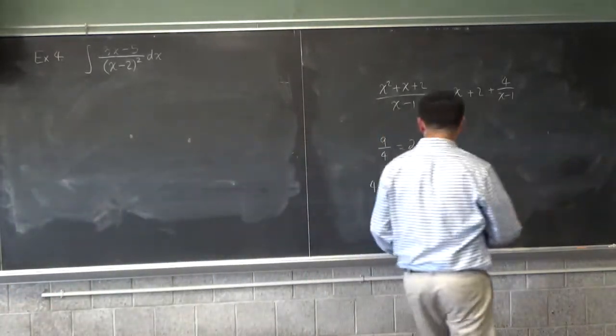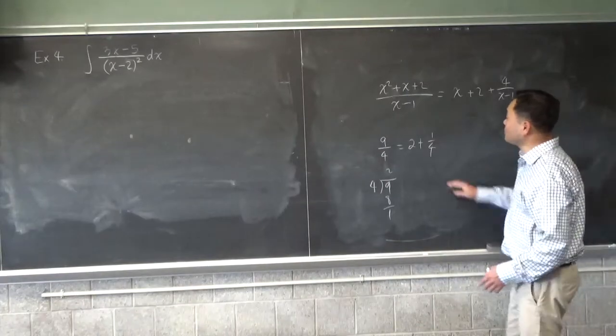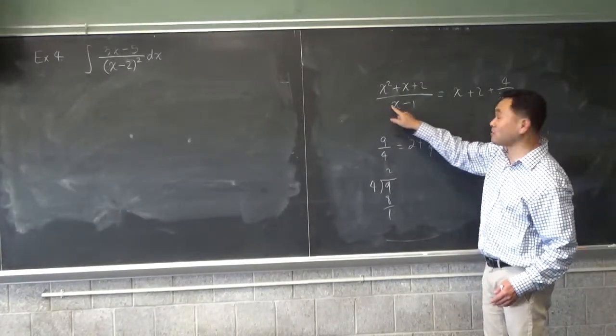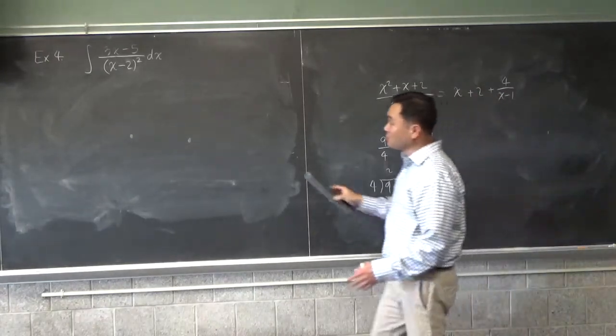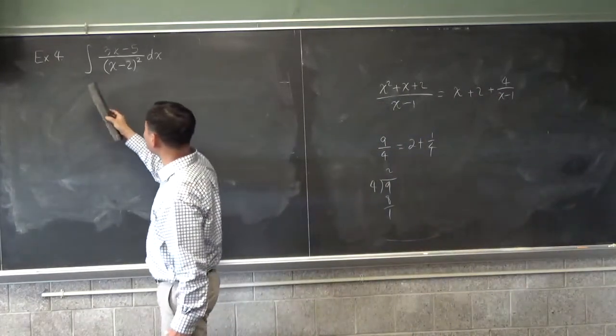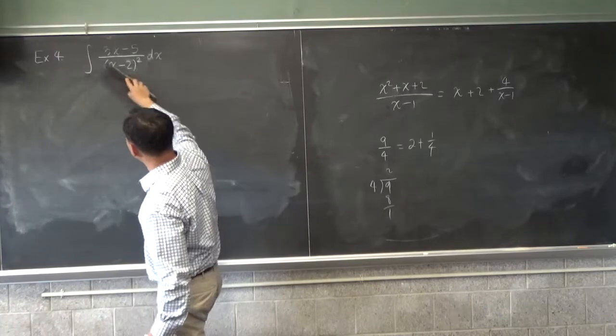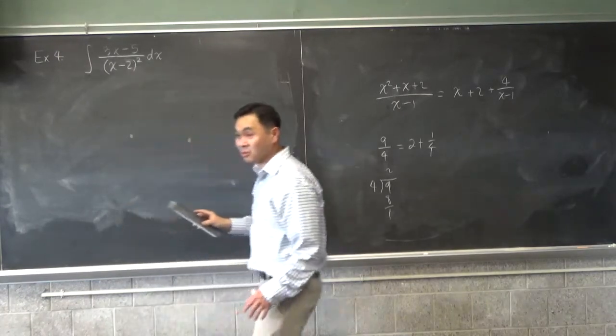But we're not going to do examples like that one. But then if you could do it that way, would you just integrate it? Yeah. So if you want to integrate something like this, then you would first have to do the long division. Now, this doesn't need long division because the denominator is second order and the top one is first order.